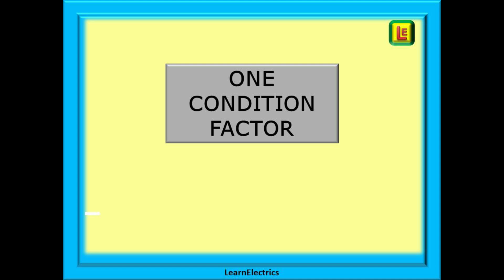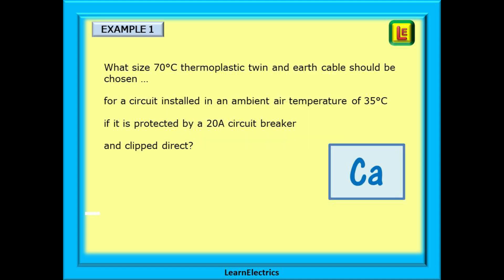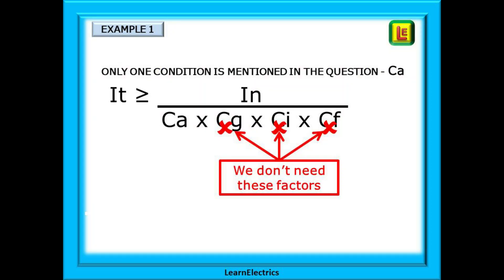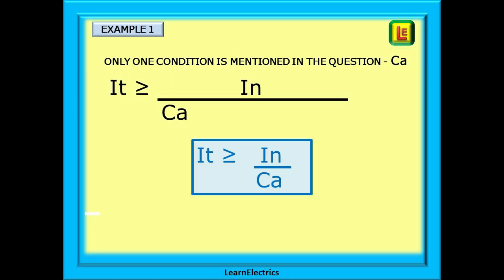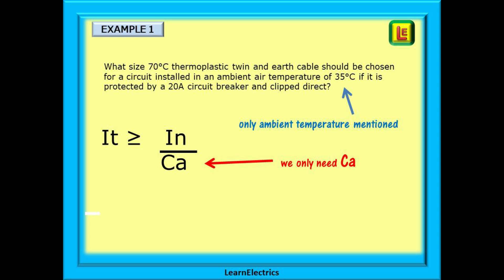Let's begin by using an example and looking at just one condition factor. What size 70 degrees centigrade thermoplastic or PVC twin and earth cable should be chosen for a circuit installed in an ambient air temperature of 35 degrees centigrade if it is protected by a 20 amp circuit breaker and clipped direct? Because it is ambient air temperature, this will be our condition code CA. If we go back to our big formula, we notice that only CA is required. Because the others are not applicable, we can effectively ignore these in the calculation. So let's get rid of CG, CI and CF. We are now left with IT must be greater than the fuse rating divided by the factor for ambient air temperature.